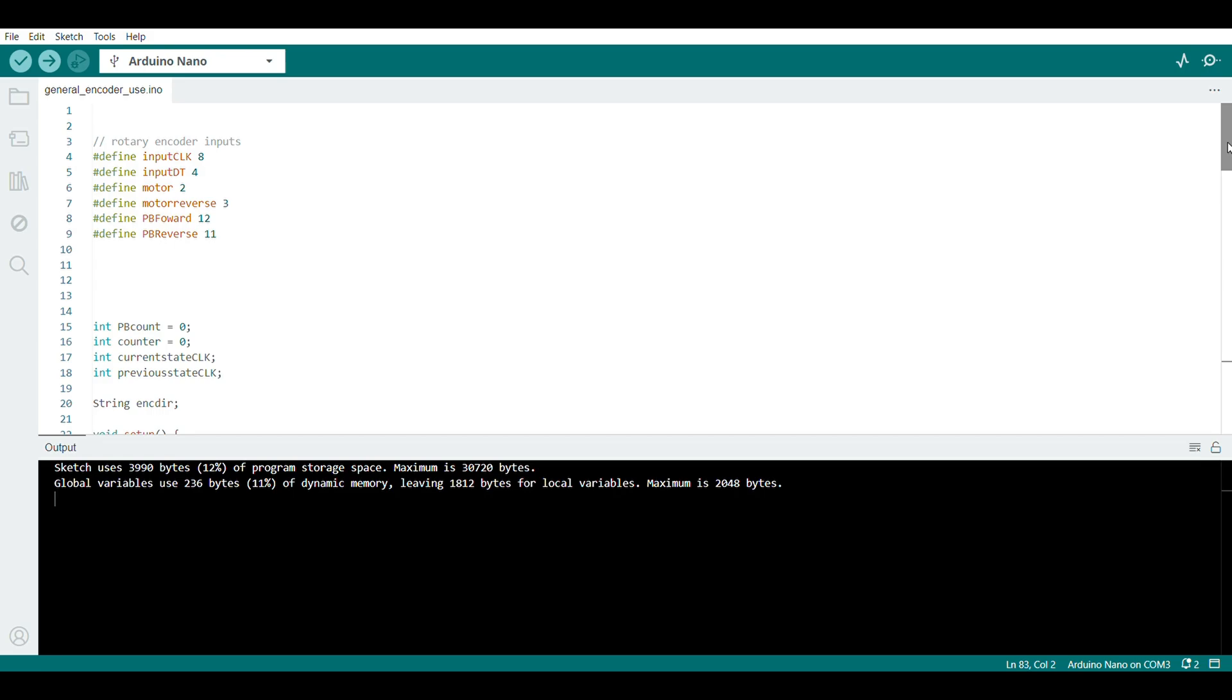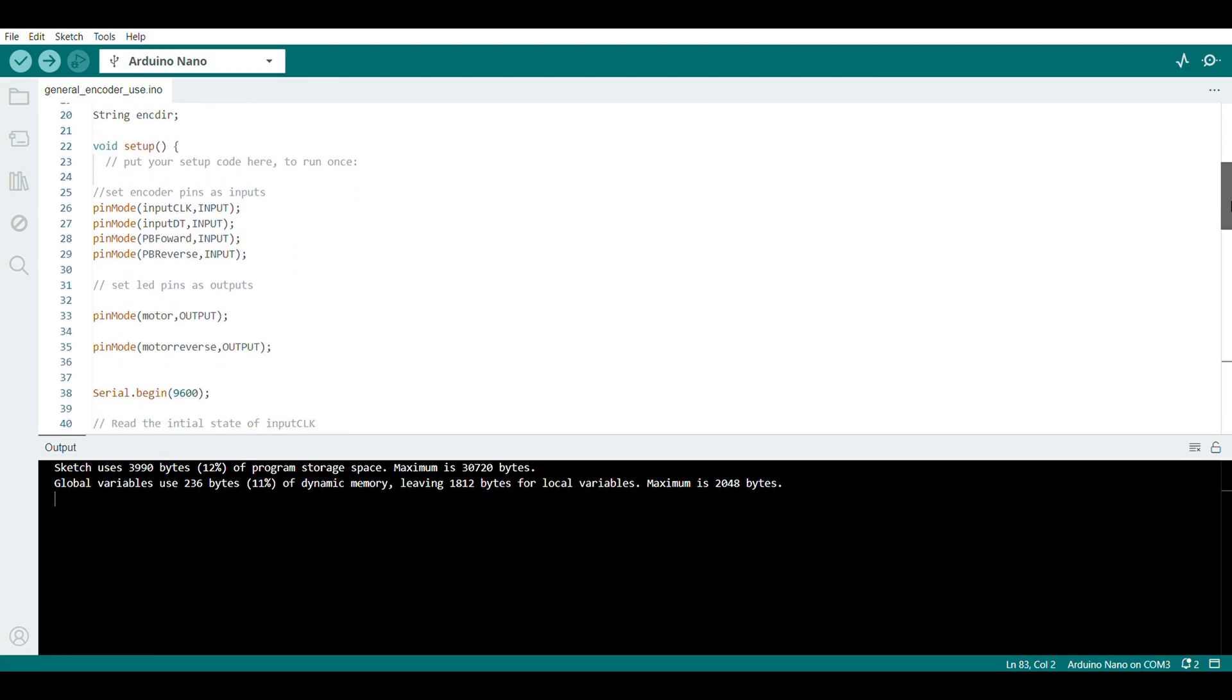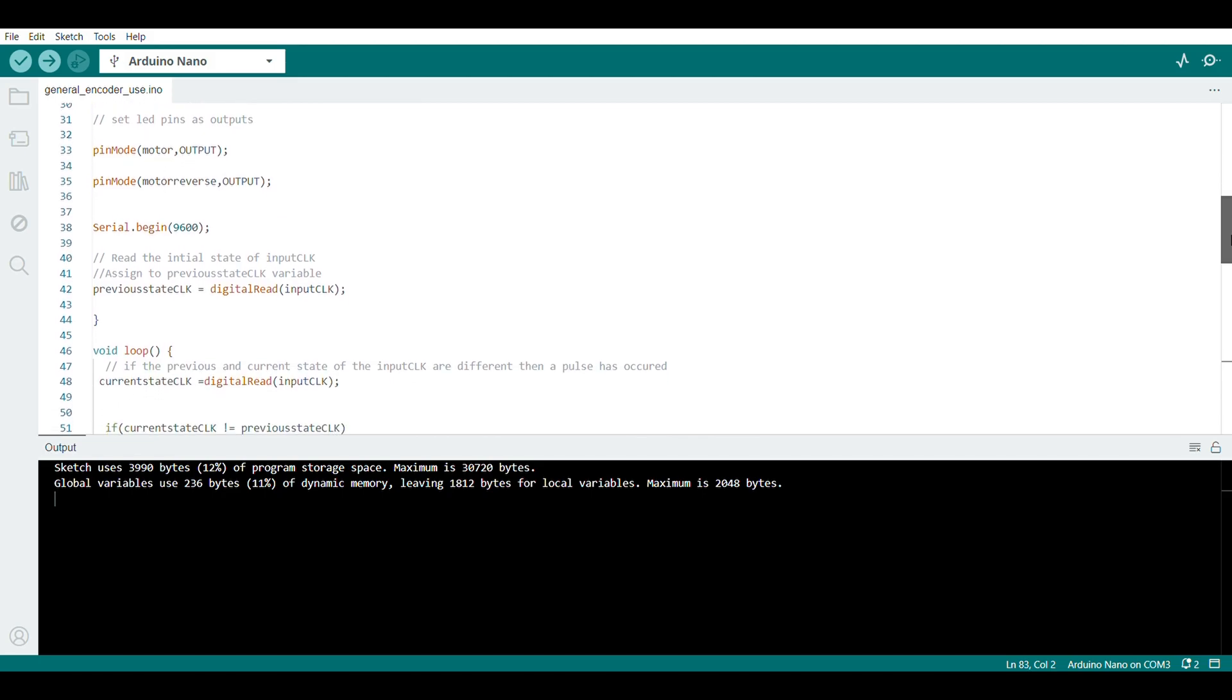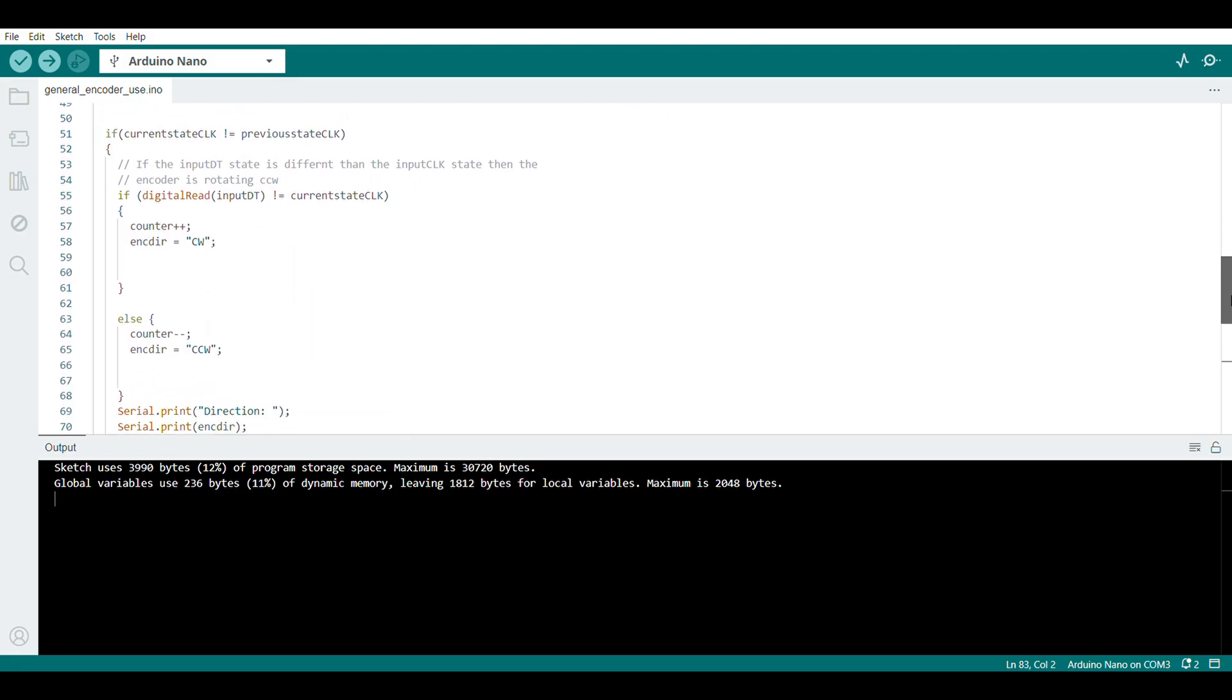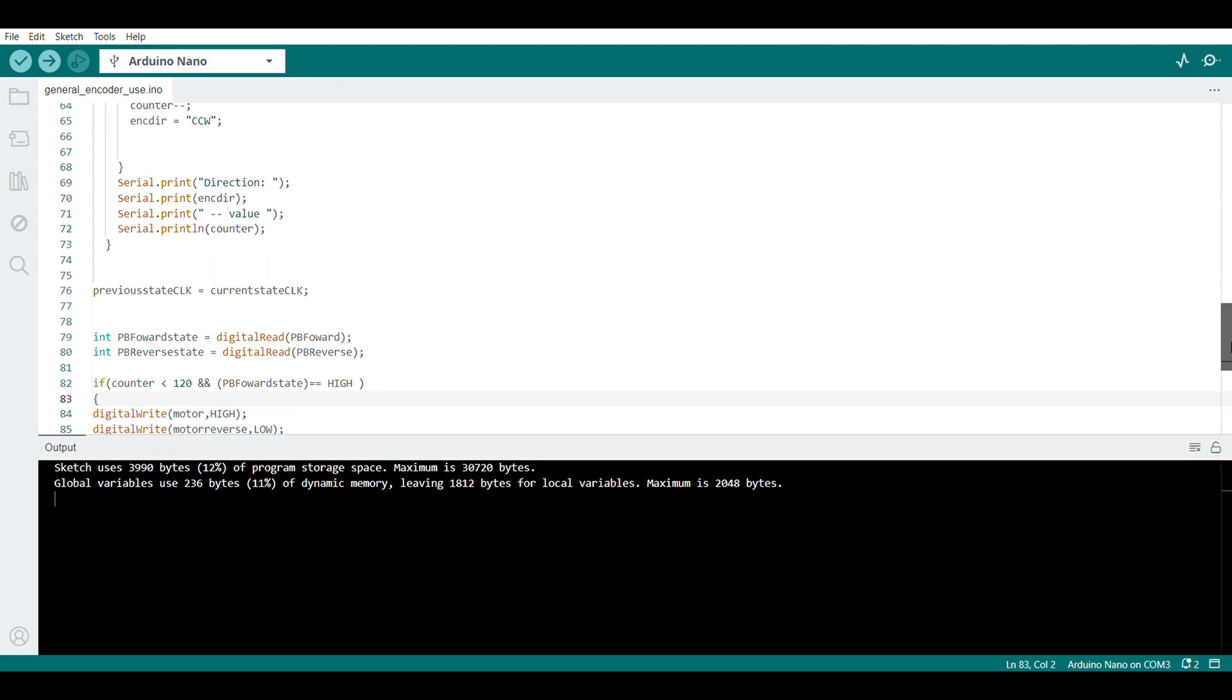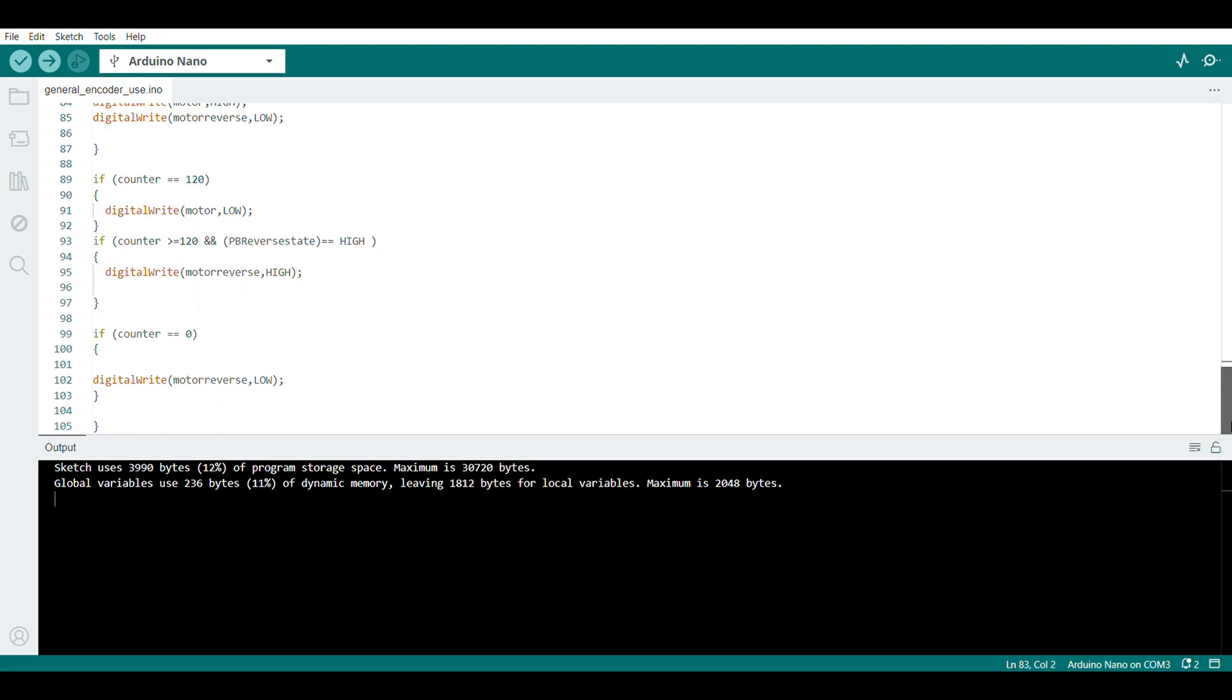Here is the source code. The counting part for the encoder I sourced off YouTube. I believe the guy's channel is either Dronebot or Makerbot Workshop. It's an older guy that I just copied line for line, and I just added my own code at the bottom for the encoder to stop and start at specific points.